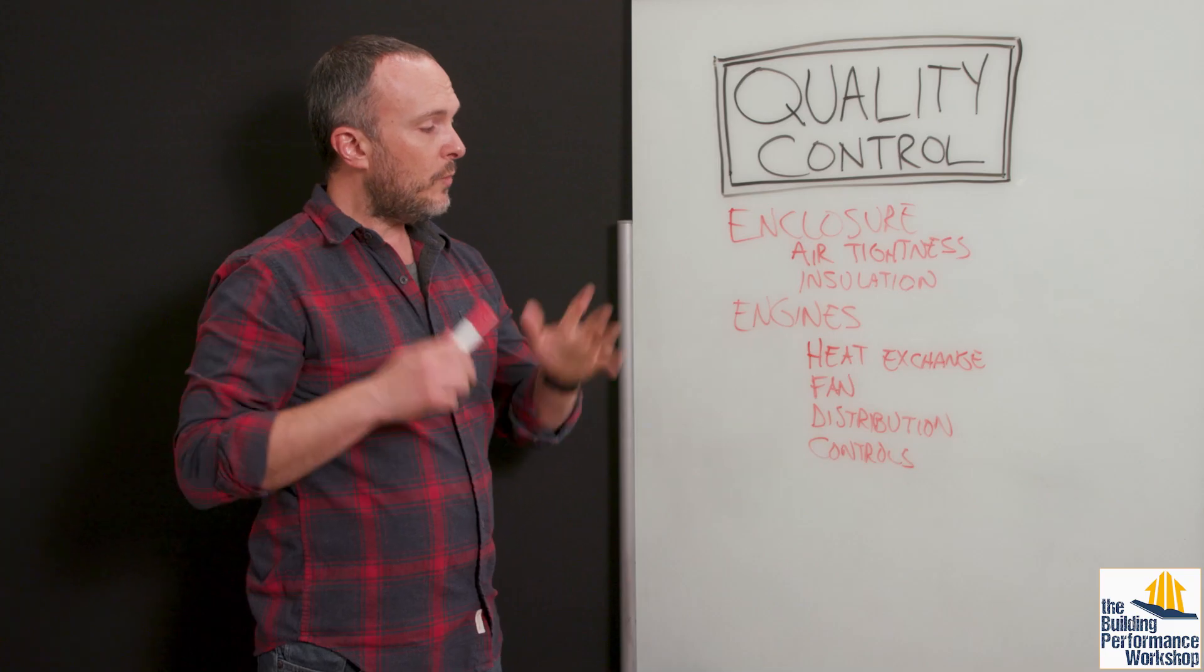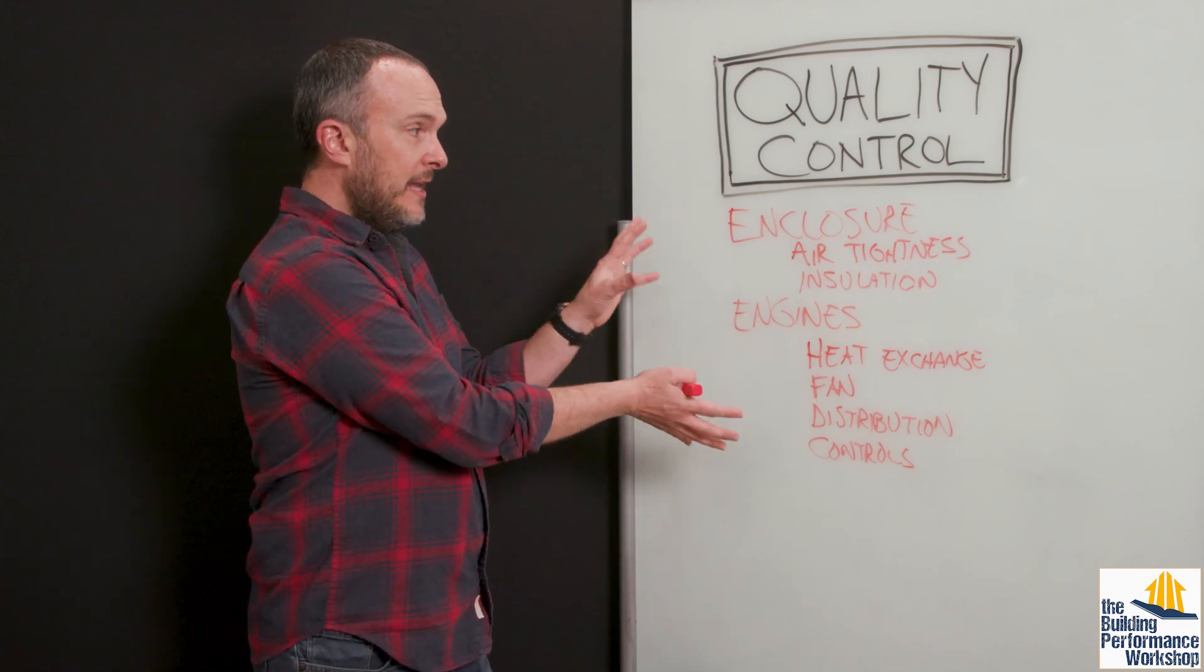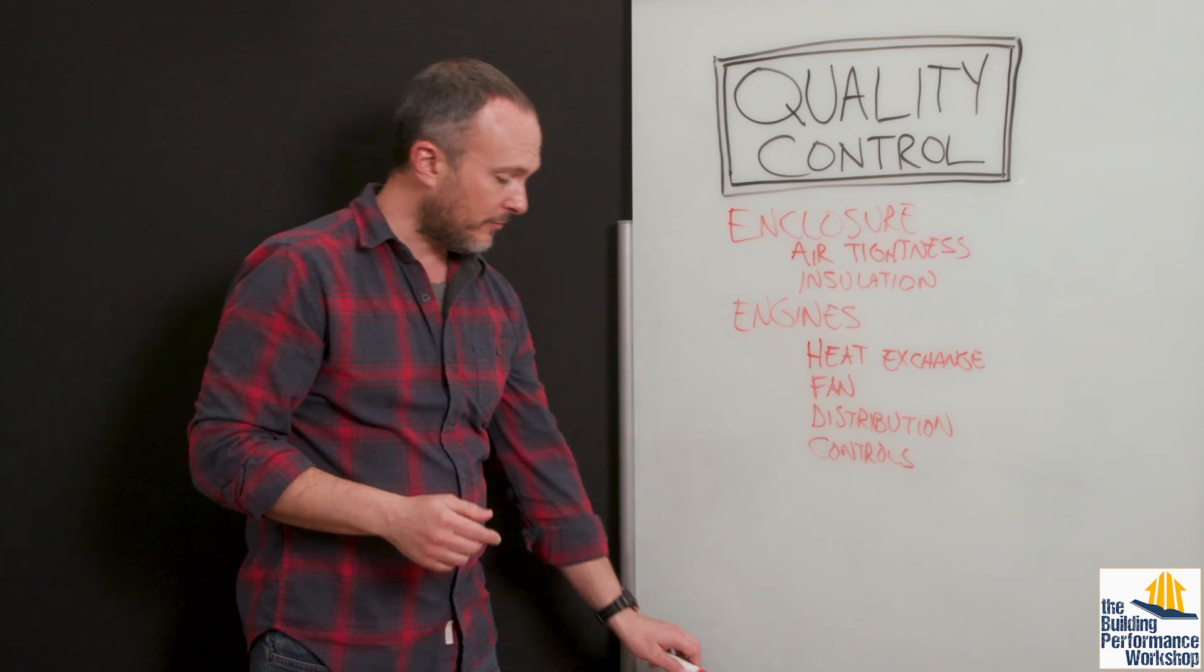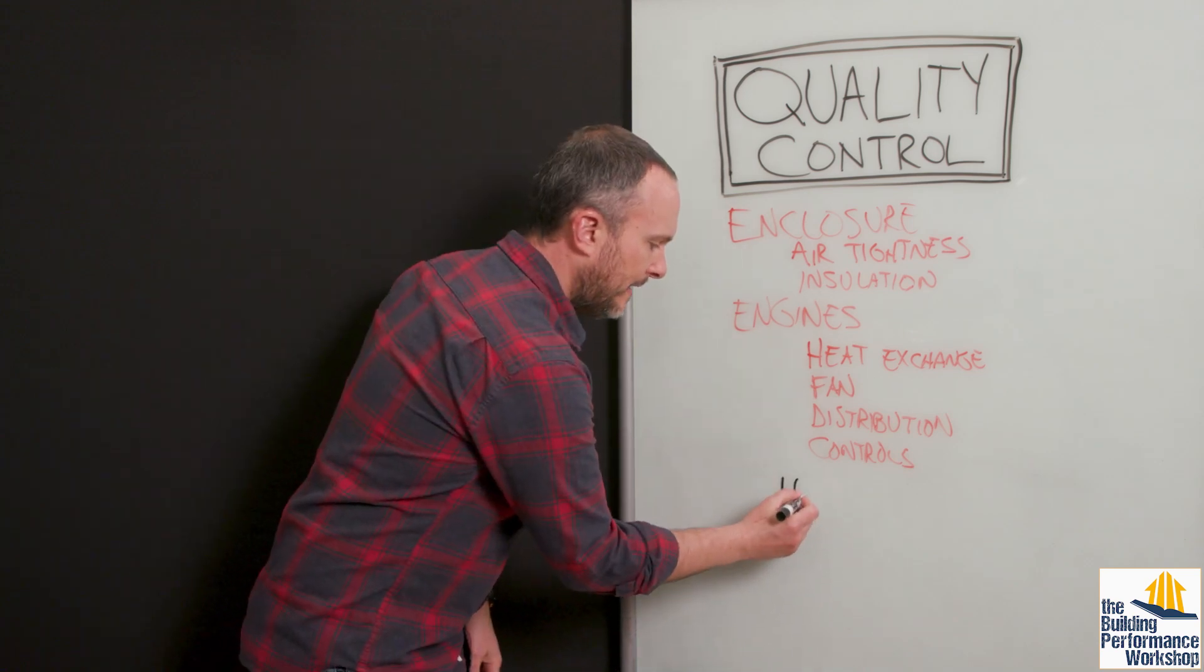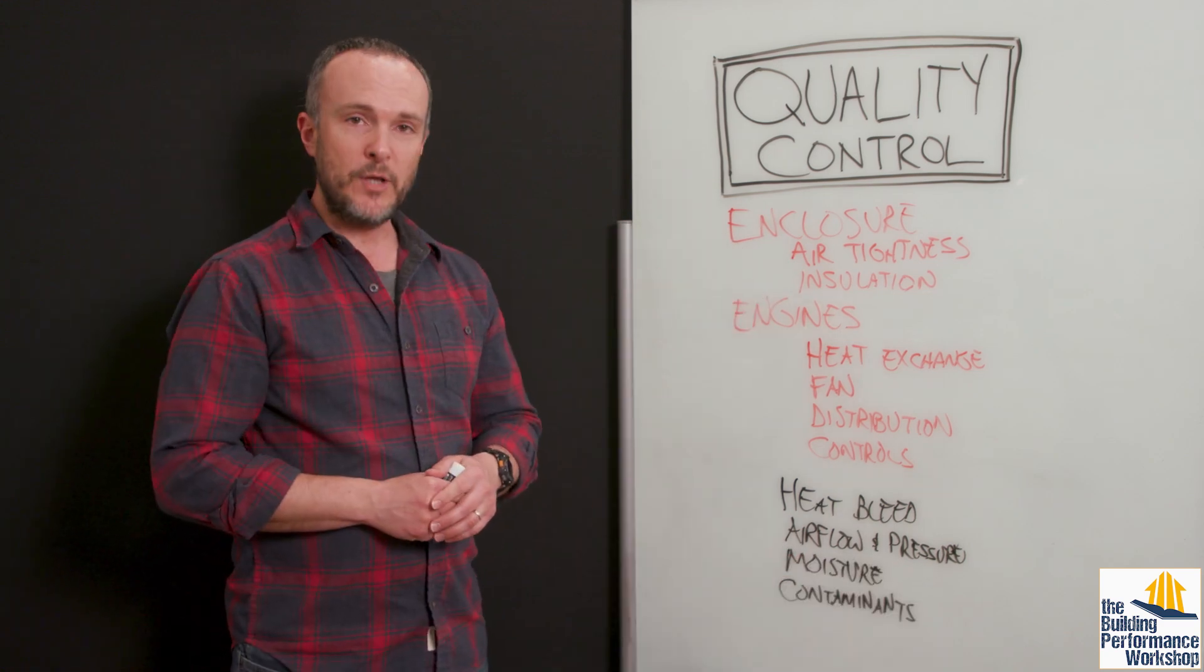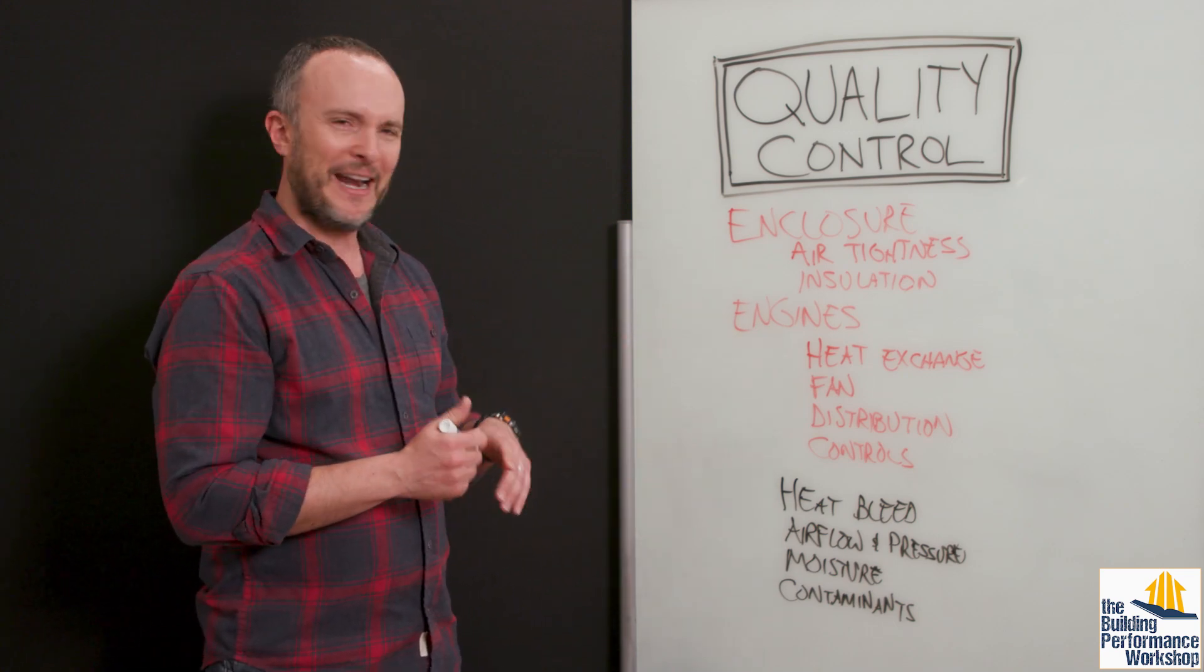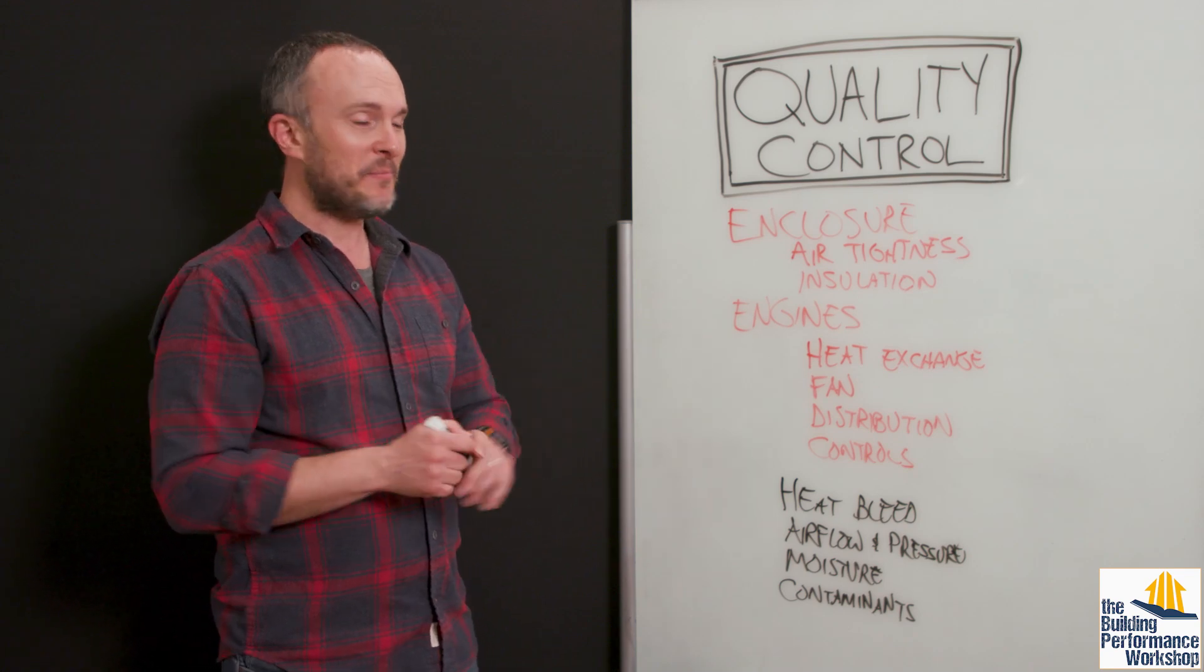So all we have to do is address the quality of these components. Now, the elements of home performance that we're always aiming for are four: there is heat bleed, airflow and pressure, moisture, and contaminants. This is basically the whole picture. It's not a very pretty picture and I'm sorry that it's a little slopey. I don't have the best penmanship for this, but it's fun to pretend to be a professor.